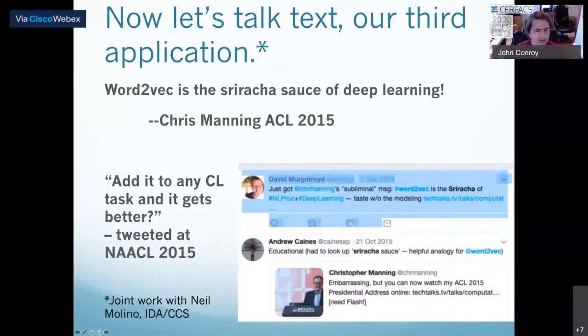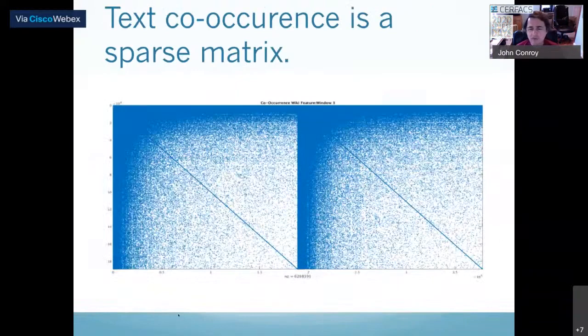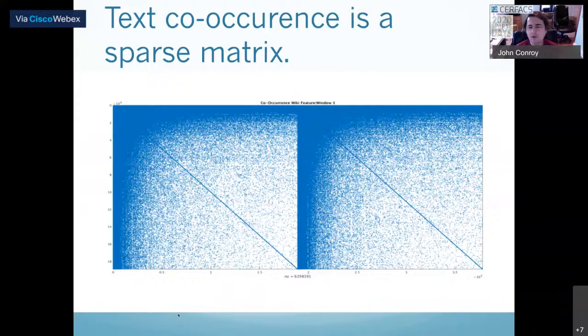Our third application is having to do with natural language processing, an area of machine learning. Many of you may have heard of methods which take words and associate them with points in Euclidean space. One of the most popular methods is called Word2Vec. About a handful of years ago, Chris Manning at Stanford referred to them as the sriracha sauce of deep learning. Some folks have added anything that makes it better.